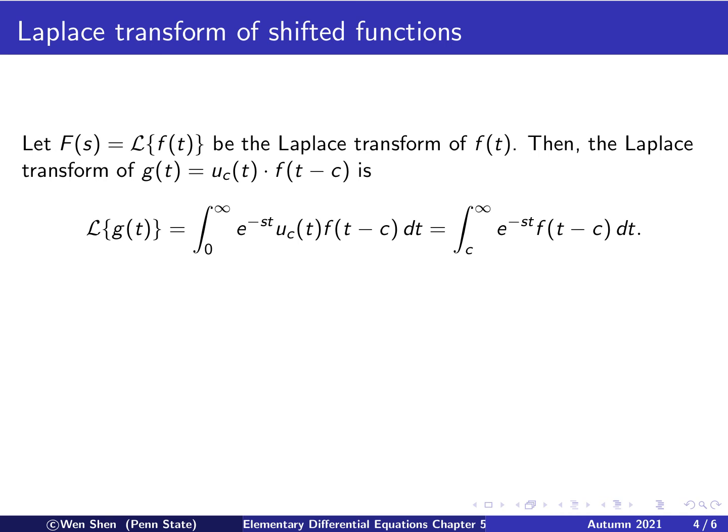Now comes the interesting question: how is the Laplace transform changed after we shift the function? Let's denote capital F of s to be the Laplace transform of f of t. Then what would the Laplace transform of g of t be, where g of t is this shift? The Laplace transform of g is the integral of g times e to the negative st dt. Using the fact that uc of t is 0 for t less than c and 1 for t bigger than c, we integrate from c to infinity and drop the factor of 1.